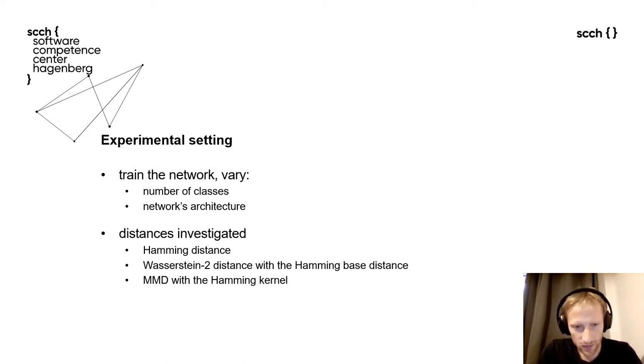As a benchmark distance, we used a Fréchet distance which is for multivariate Gaussians and distance of moments. For distances on binary activation values, we took into account the Hamming distance if the sample consisted of one point, a Wasserstein 2 distance with the Hamming base distance, and maximum discrepancy with the Hamming kernel.